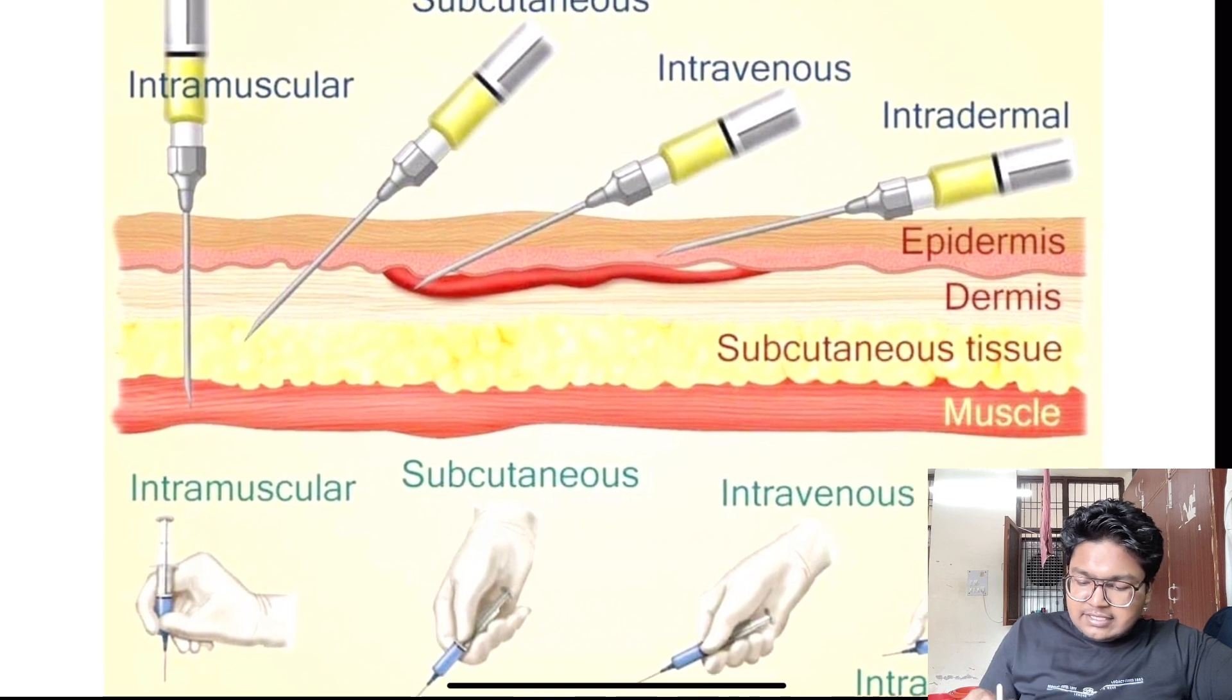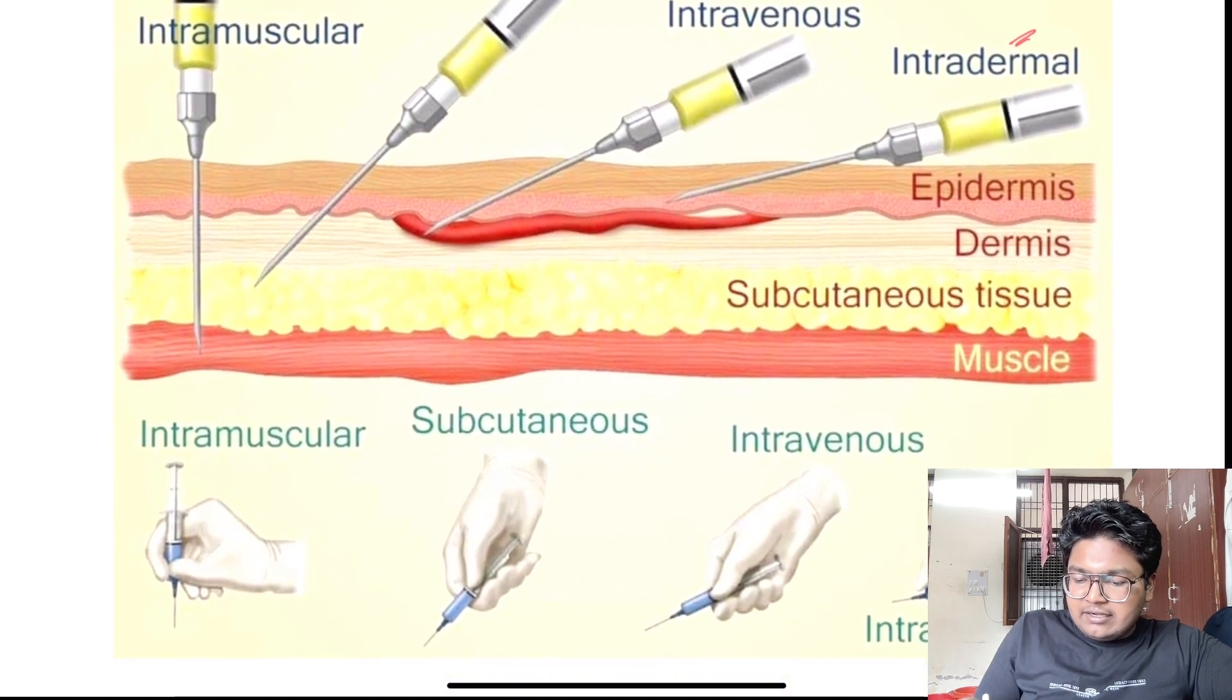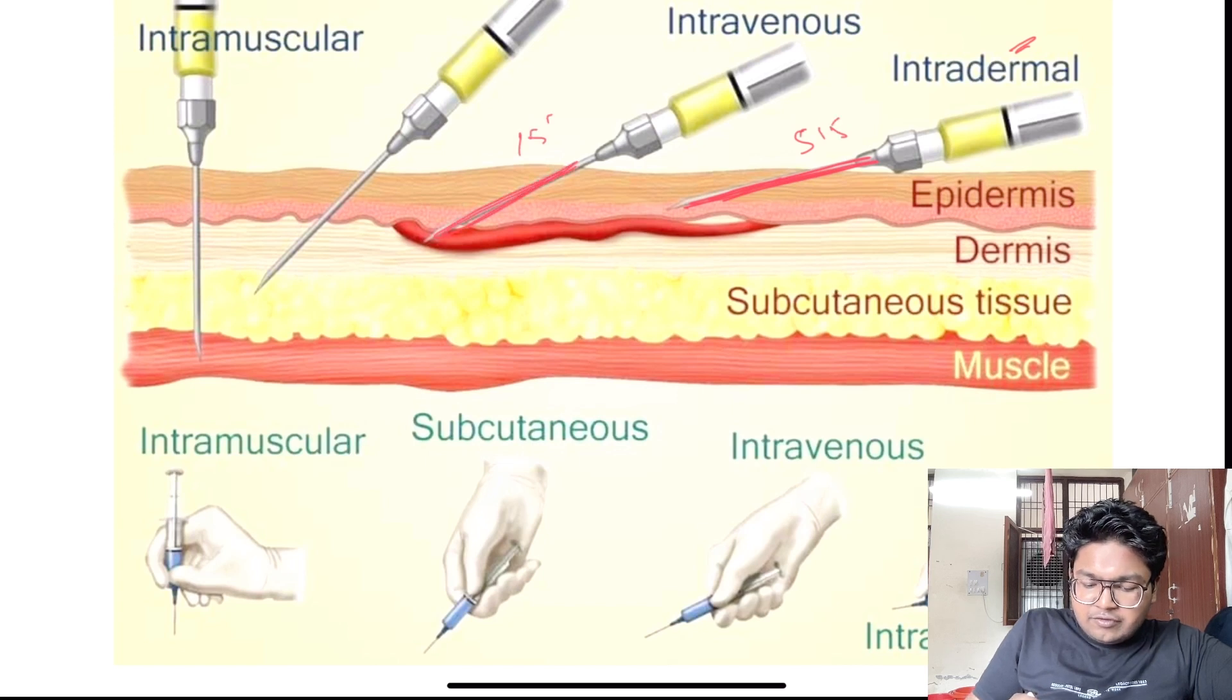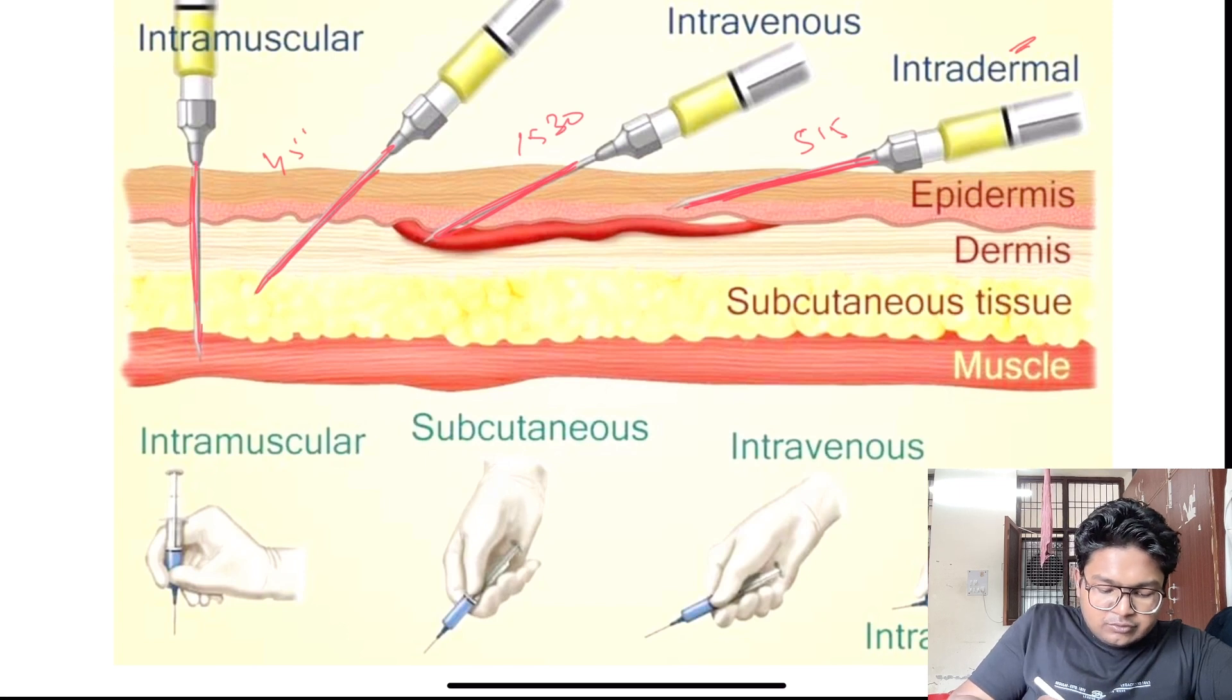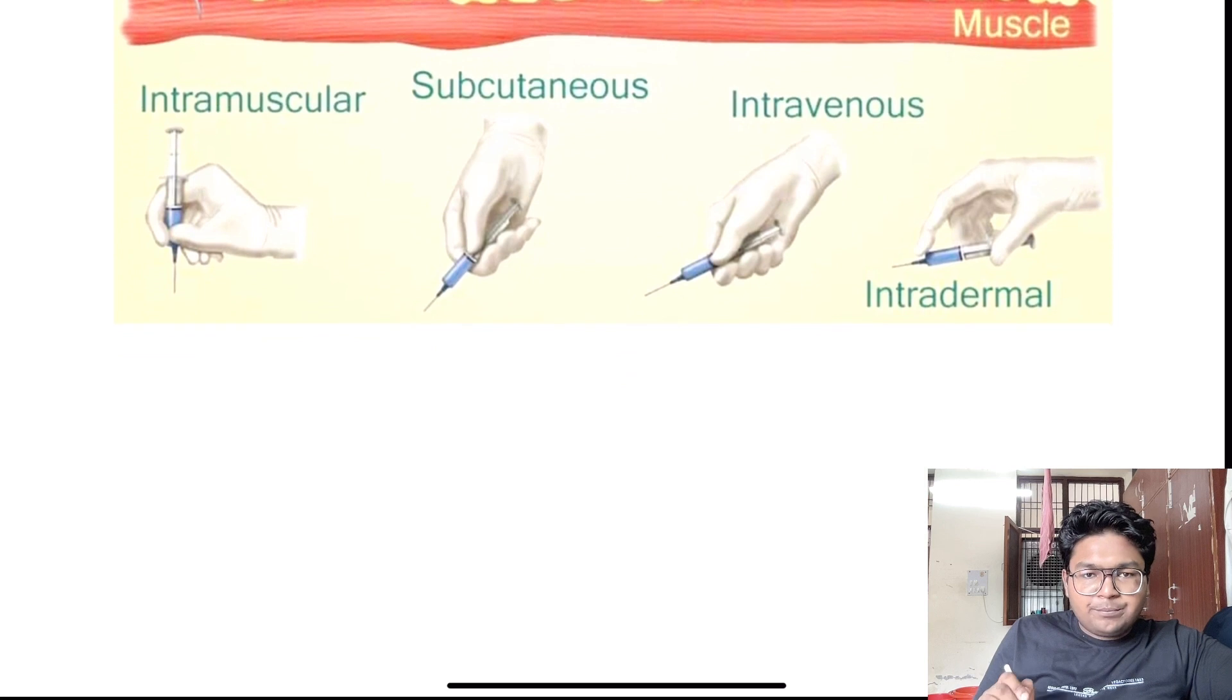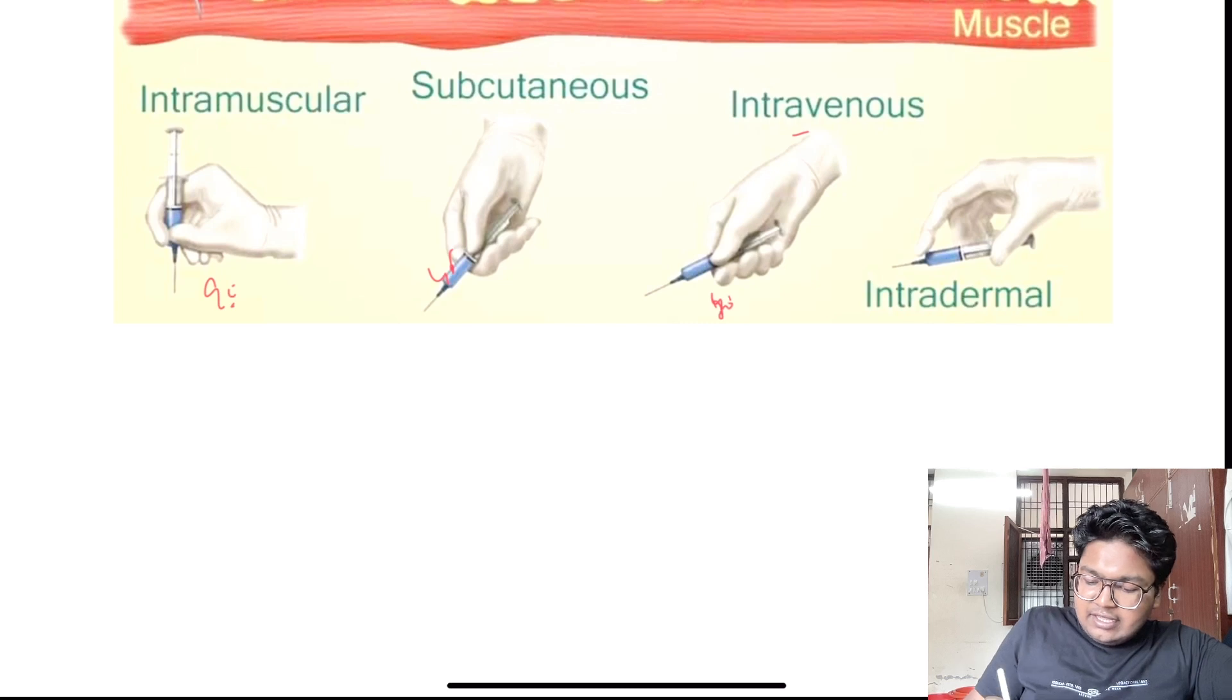Let's conclude. First, we have intradermal, 5 to 15 degrees. Then intravenous, 15 to 30 degrees. Subcutaneous, around 45 degrees. And intramuscular, around 90 degrees. This is the technique to hold the syringe: intramuscular 90 degrees, subcutaneous 45 degrees, intravenous around 30 degrees, and intradermal around 5 to 15 degrees.